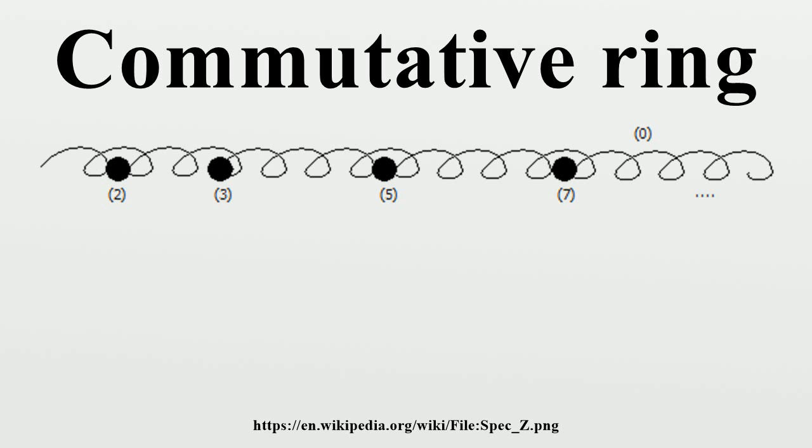The localization R_P is important enough to have its own notation. This ring has only one maximal ideal, namely P R_P. Such rings are called local. By the above, any maximal ideal is prime.